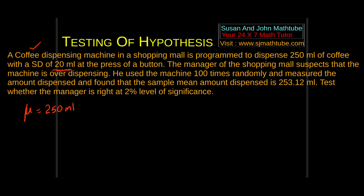The manager of the shopping mall is suspicious that the machine is over-dispensing. That means he suspects that, on average, the customers are getting more than 250 ml. So he collected samples — he used the machine 100 times and measured it. He found the sample mean of the 100 samples to be x̄ = 253.12.